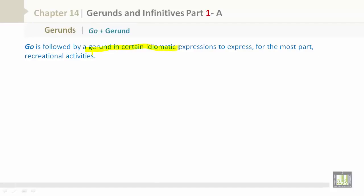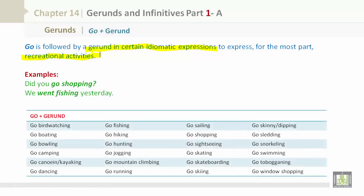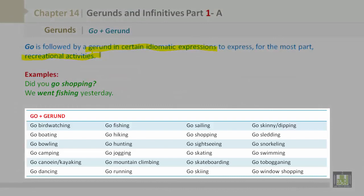Go plus gerund: 'go' is followed by a gerund in certain idiomatic expressions, mostly to express recreational activities. Examples: 'Did you go shopping?' 'We went fishing yesterday.' The go plus gerund list includes: go bird watching, go boating, go bowling, go camping, go kayaking, go dancing, go fishing, go hiking, go hunting, go jogging, go mountain climbing, go running, go sailing.